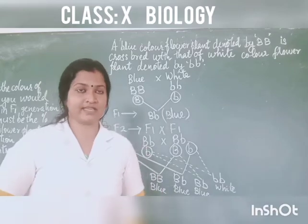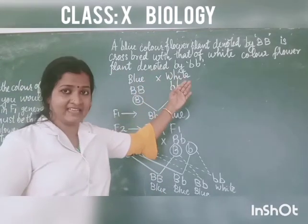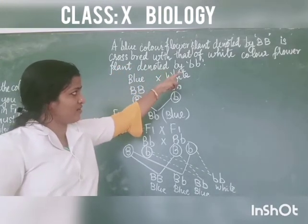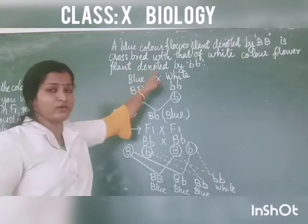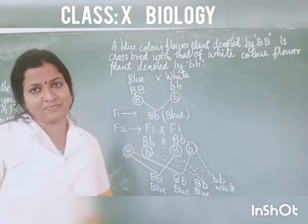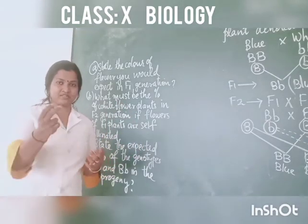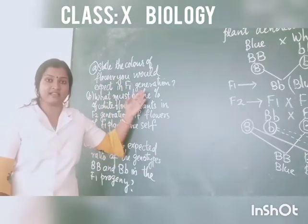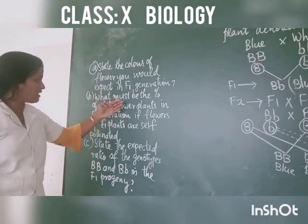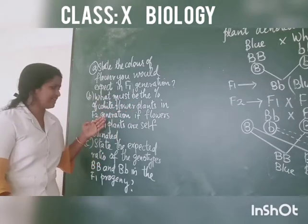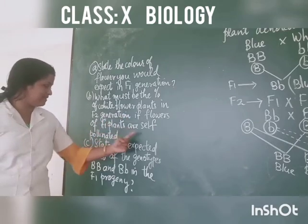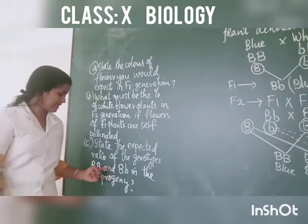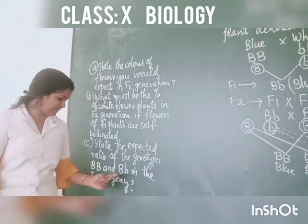Read the question. A blue color flower plant denoted by capital B, capital B is crossbred with a white color flower plant denoted by small b, small b. Question A: State the color of flower you would expect in F1 generation. Question B: What must be the percentage of white flower plants in F2 generation if flowers of F1 plants are self-pollinated? Question C: State the expected ratio of genotypes capital BB and capital B small b in the F2 generation.